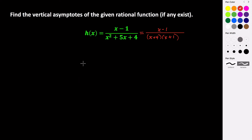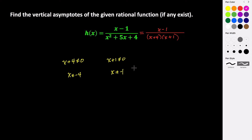From this we have that x plus 4 cannot equal 0 and x plus 1 cannot equal 0. So we get that x cannot equal negative 4 and x cannot equal negative 1. At those two values we are going to get vertical asymptotes. We have vertical asymptotes at x equals negative 4 and at x equals negative 1.